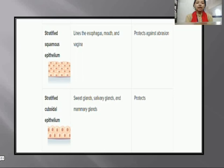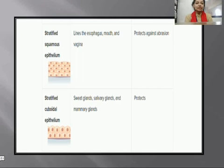Stratified squamous epithelium lines the esophagus, mouth, and vagina, and it mainly aids in protection against damage. Stratified cuboidal epithelium is present in sweat glands, salivary glands, and mammary glands, and its main function is protection of these glands from external factors.